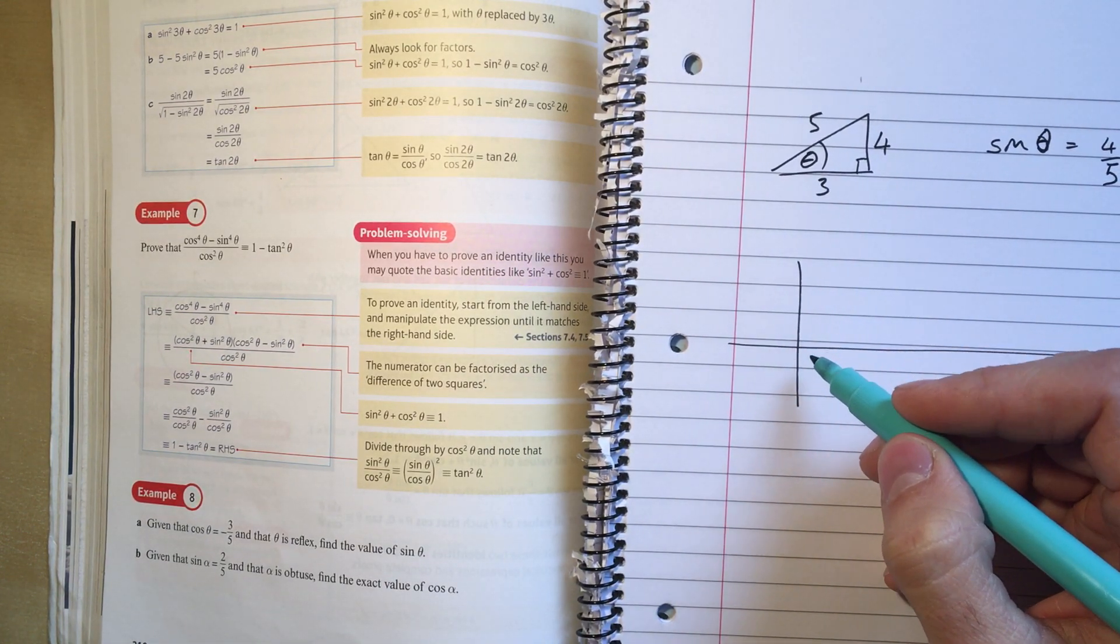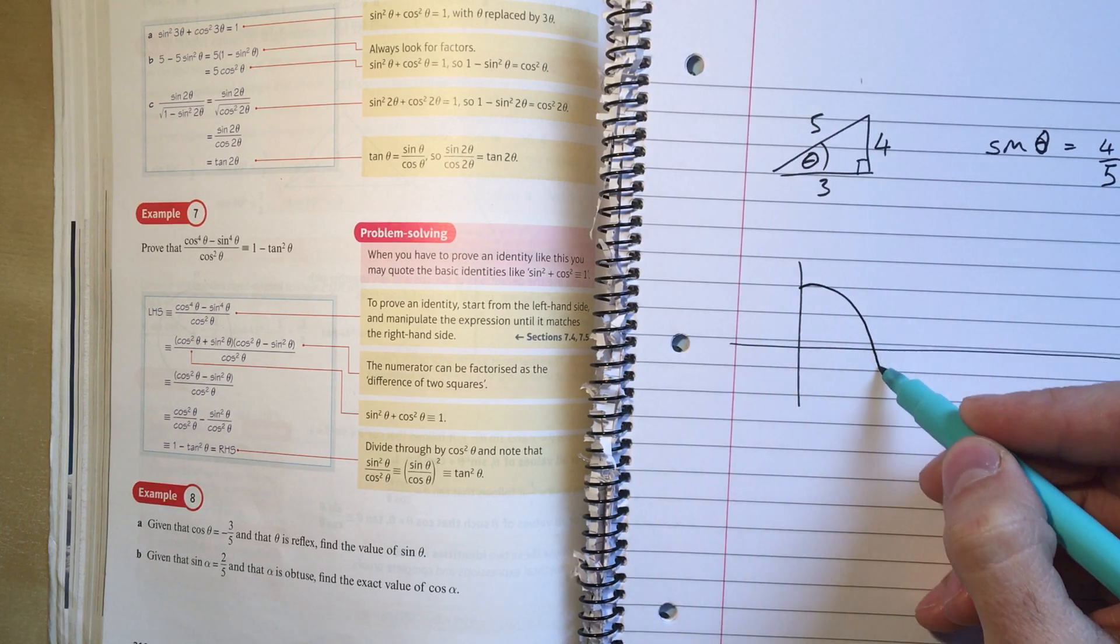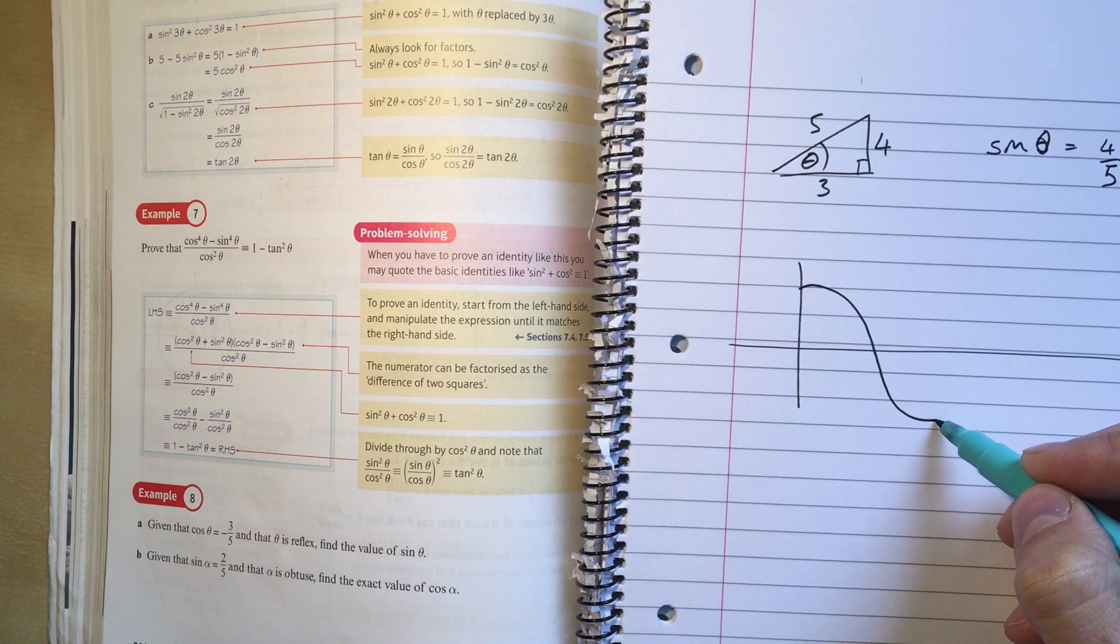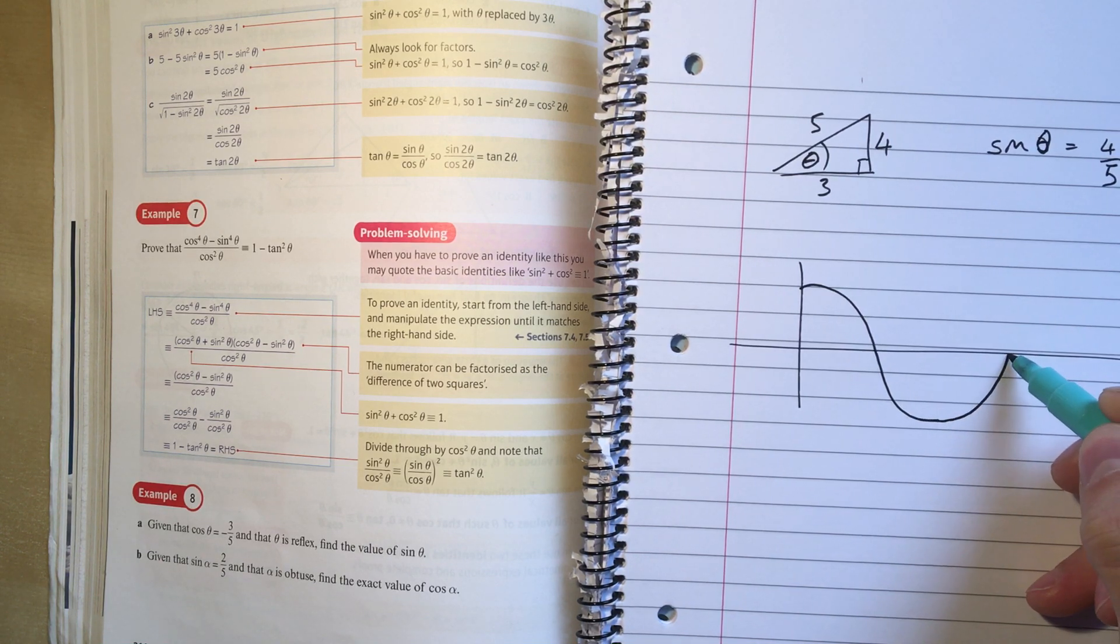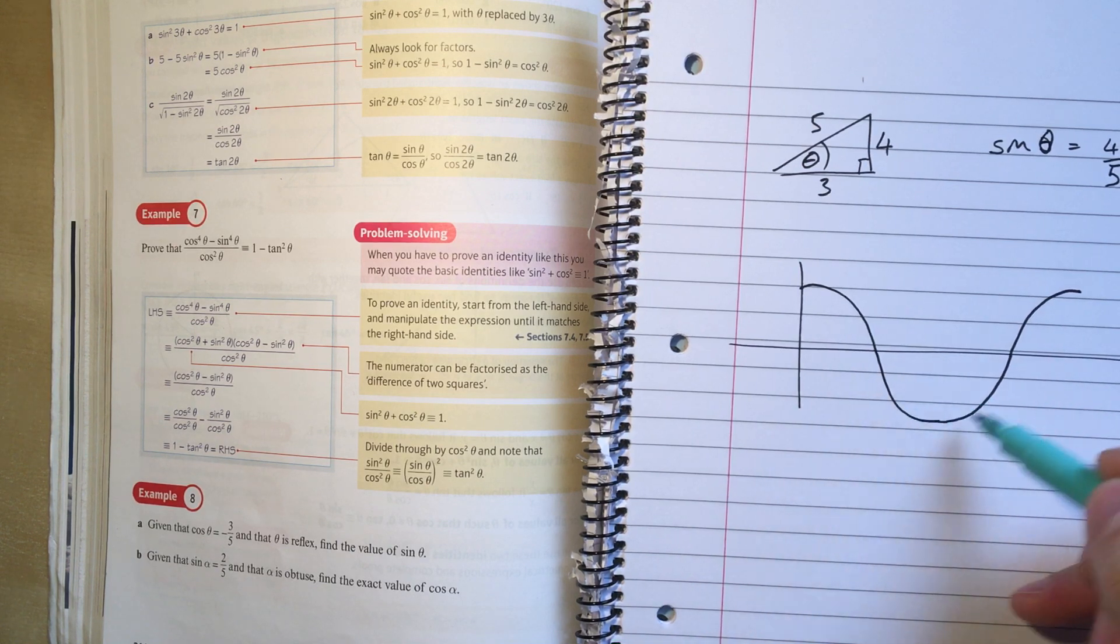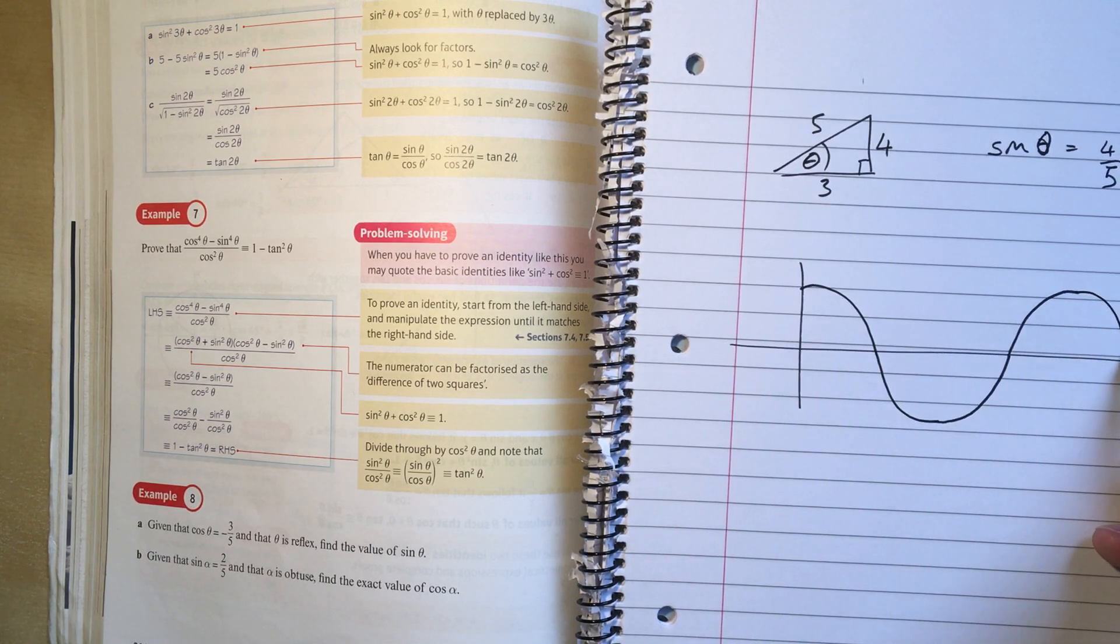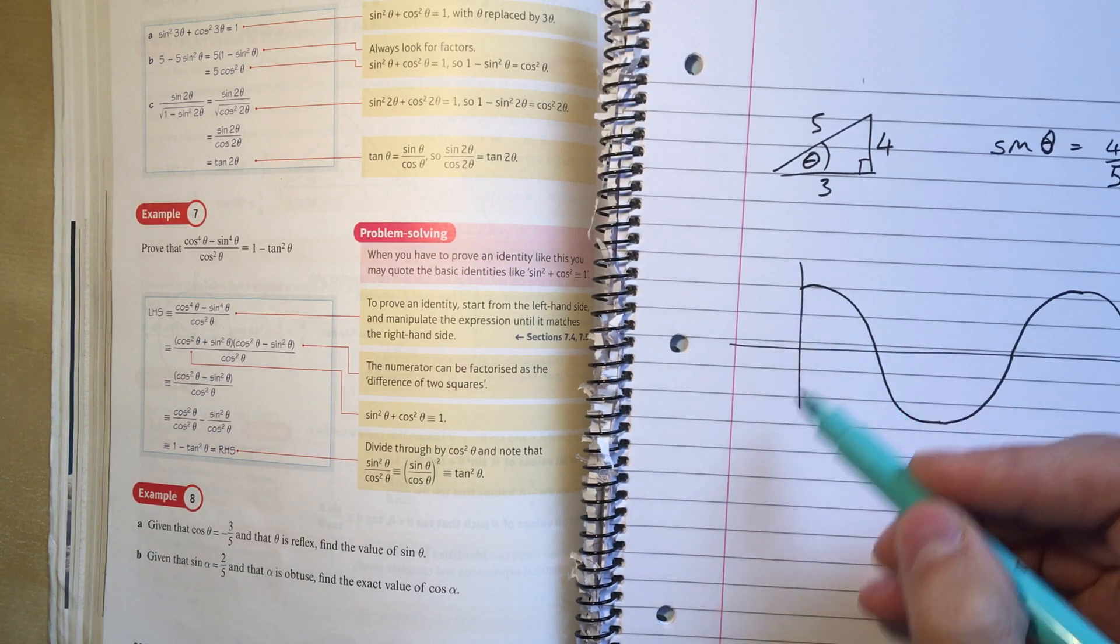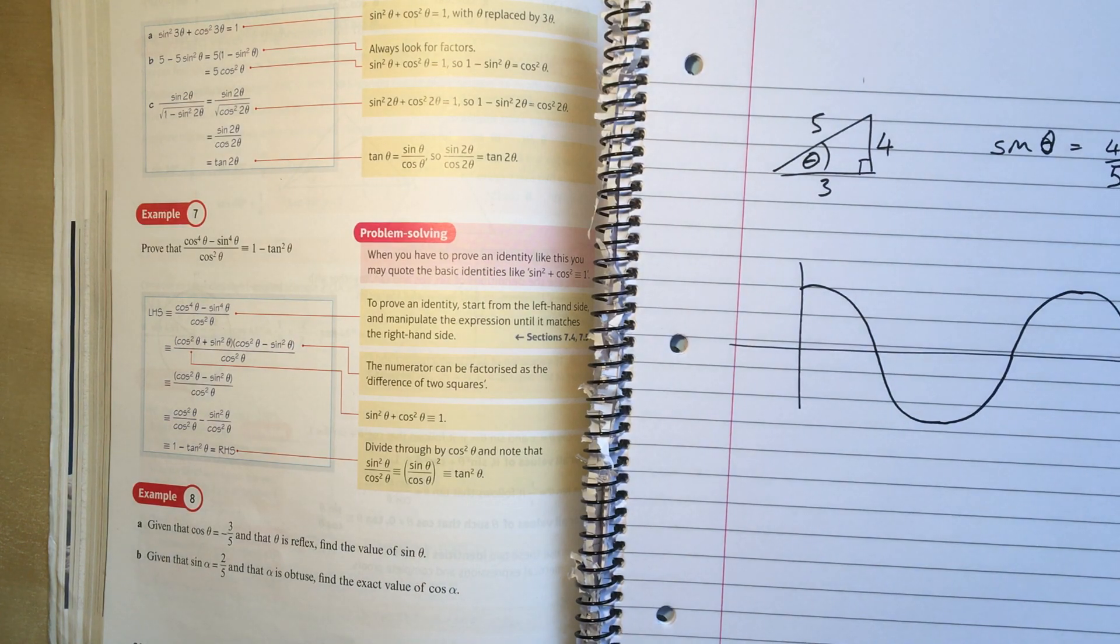If I draw my cosine graph, the acute part of the graph is the same as the 90 to 180 part of the graph, the same as the 180 to 270, the same as the 270 to 360 parts of the graph, except that some of these parts are negative. And then the next part of the graph here, it's sort of flipped around, but each section of the graph is the same shape as this bit. So we're going to use that fact again.